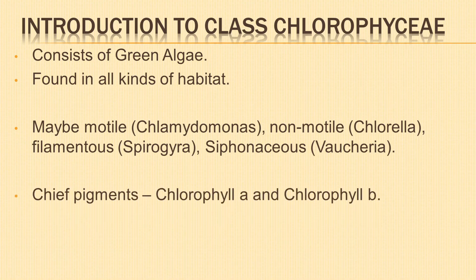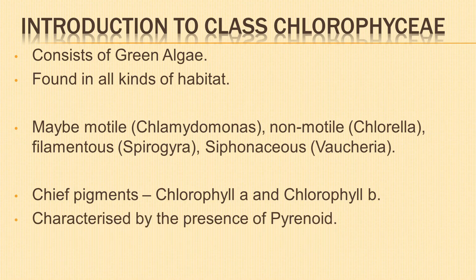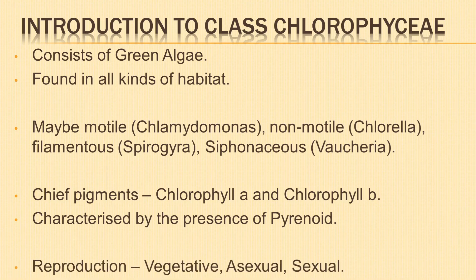The chief pigments of green algae are Chlorophyll A and Chlorophyll B, accompanied by small amounts of yellow pigment xanthophyll and orange pigment carotenoid. The class is characterized by the presence of pyrenoid and starch as the chief food material. Reproduction takes place by vegetative, asexual, and sexual means. Sexual reproduction is accomplished with the help of motile gametes, ranging from isogamy to oogamy.